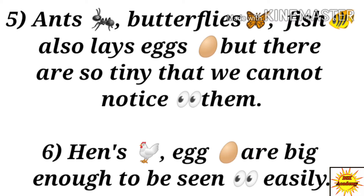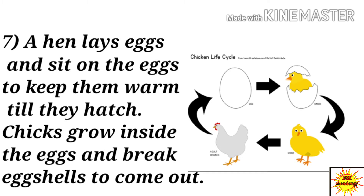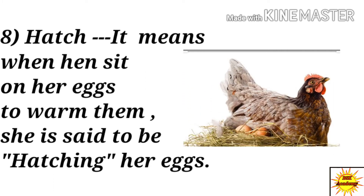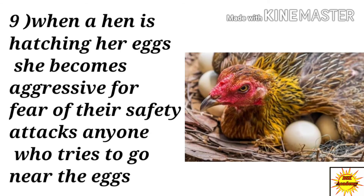A hen's eggs are big enough to be seen easily. A hen lays eggs and sits on them to keep them warm till they hatch. Chicks grow inside the eggs and break the eggshell to come out. This is called the chicken's life cycle. When a hen is hatching her eggs, she becomes aggressive for fear of their safety and attacks anyone who tries to go near the eggs.